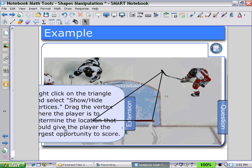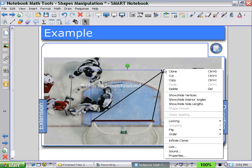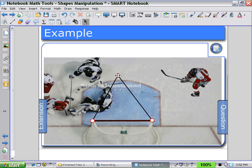So here, we can again select a triangle, use the arrow pull down menu, show and hide the vertices, and then select that vertex and drag it and calculate for the widest angle that would give the player opportunity to score.